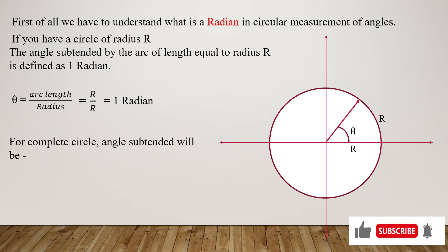Now for a complete circle, the angle subtended will be θ equals arc length divided by radius, which gives us circumference by radius. This is 2πR by R, which is 2π. So if we put the value of π, we get 6.28 radians. For a full circle, the total angle in radian measurement is 6.28 radians.